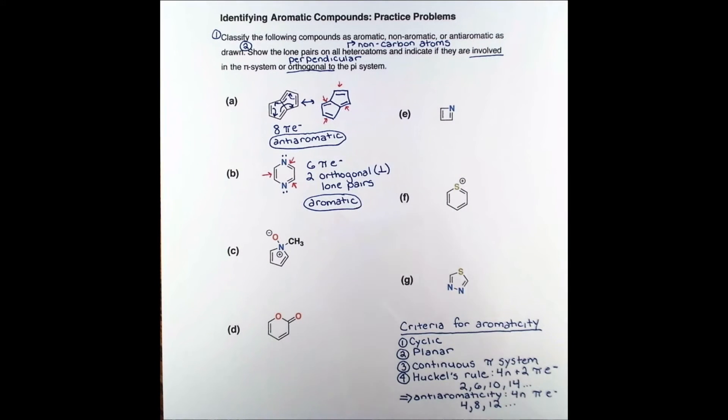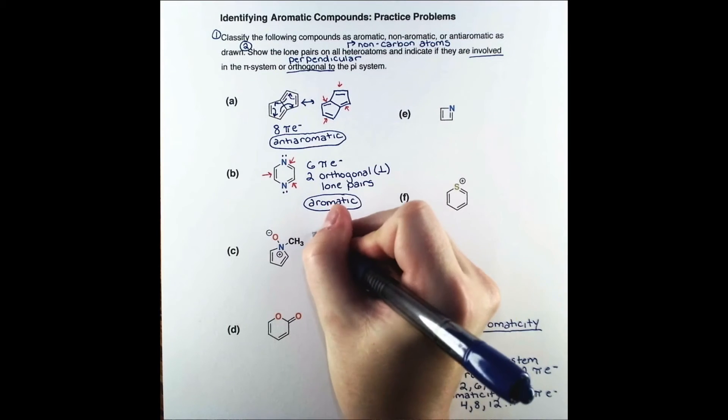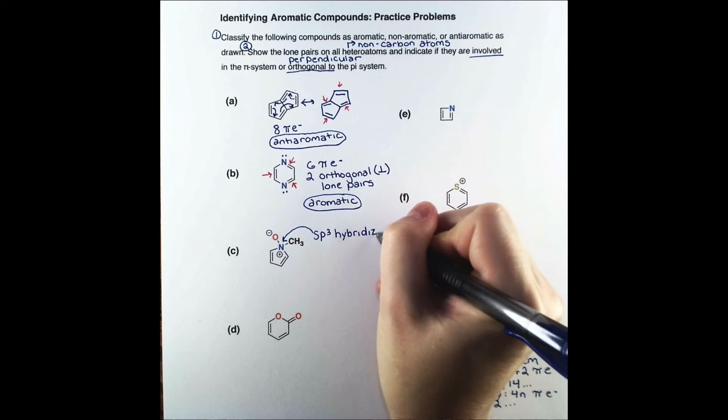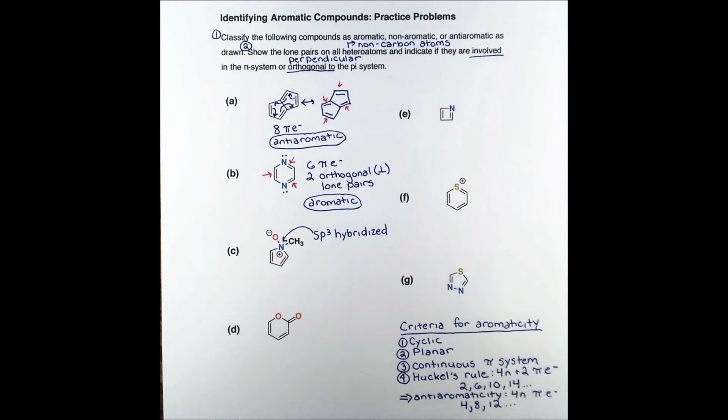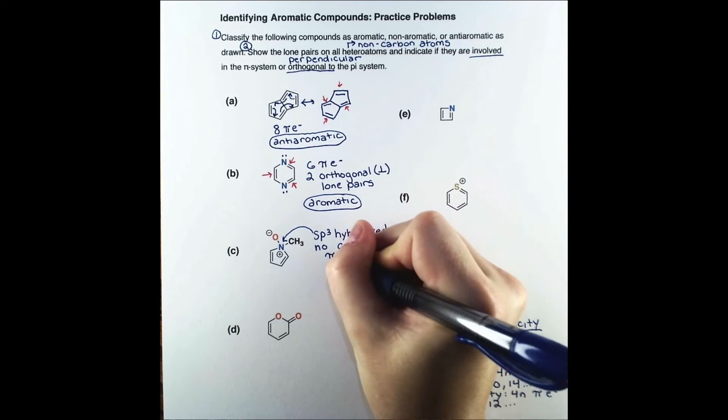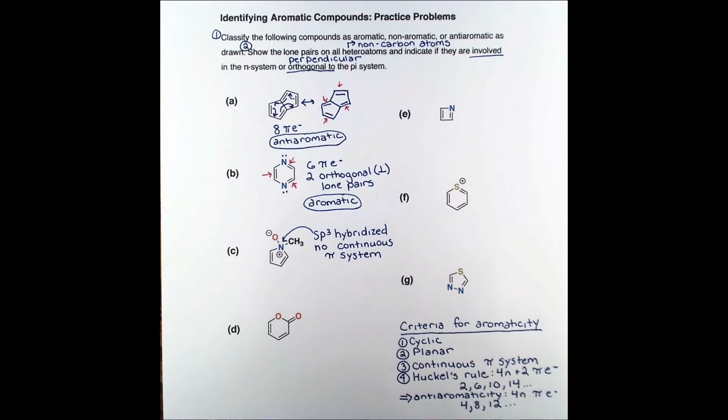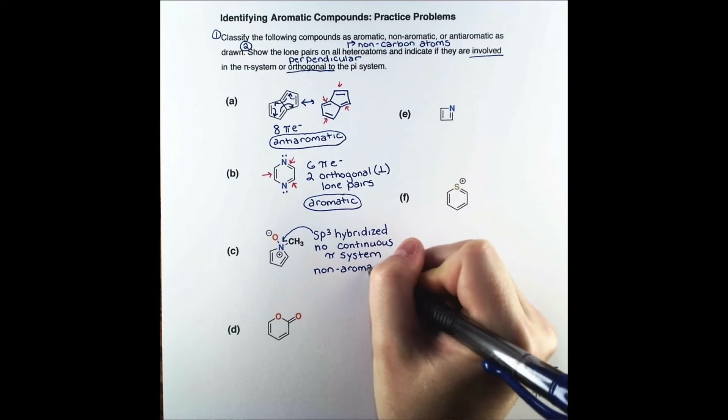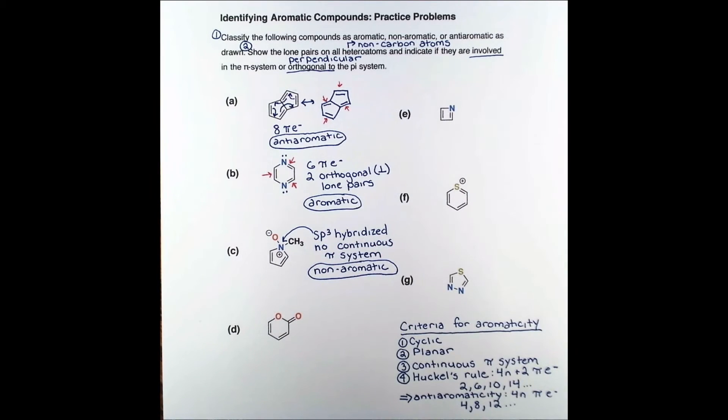Problem C has a positively charged nitrogen. It has shared its lone pair to bond with oxygen, forming an N-oxide functional group. It has four bonds, which gives it tetrahedral geometry and makes it sp3 hybridized. The sp3 nitrogen atom disrupts conjugation in the ring, and this compound is non-aromatic.